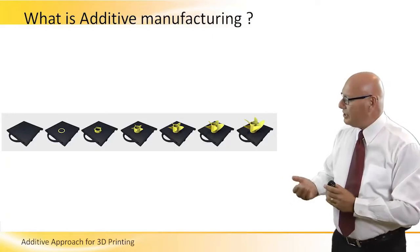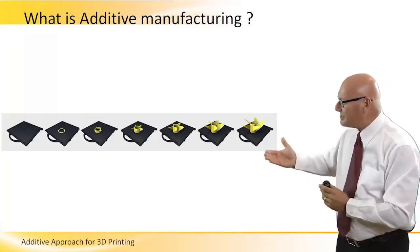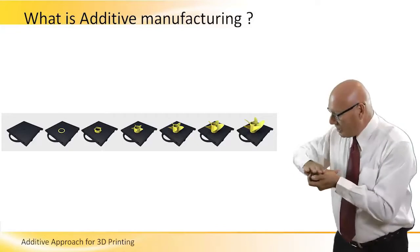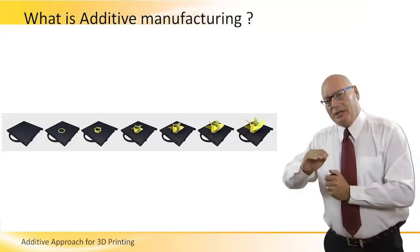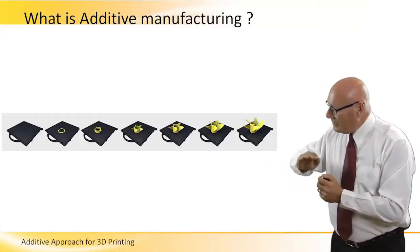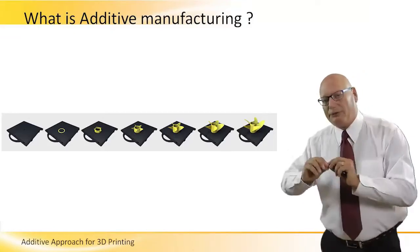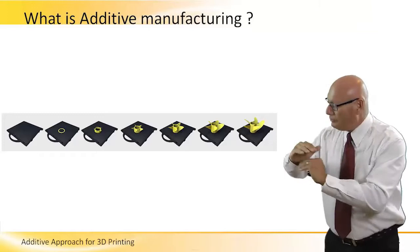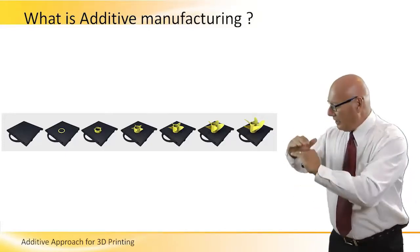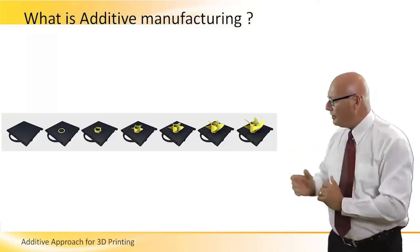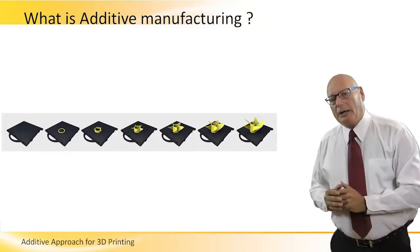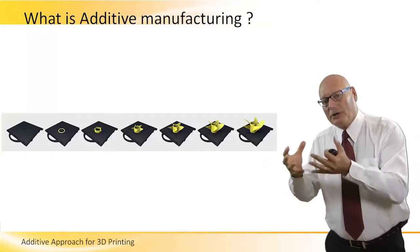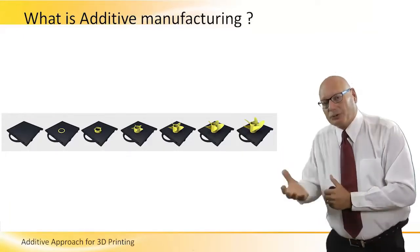Here is a nice presentation, step by step, of how a 3D object is being built. We start with the platform, then we lay down or print the very first layer. On top of that there will be another layer, and another one, and another one, all the way up to the last one, which is that particular 3D object that was built.